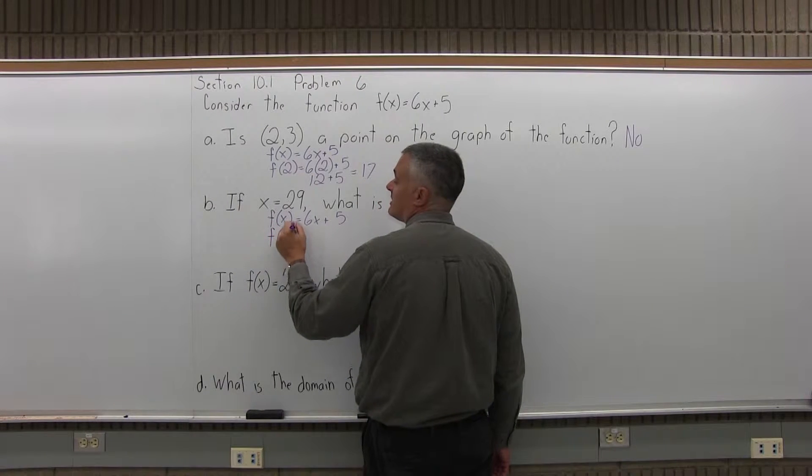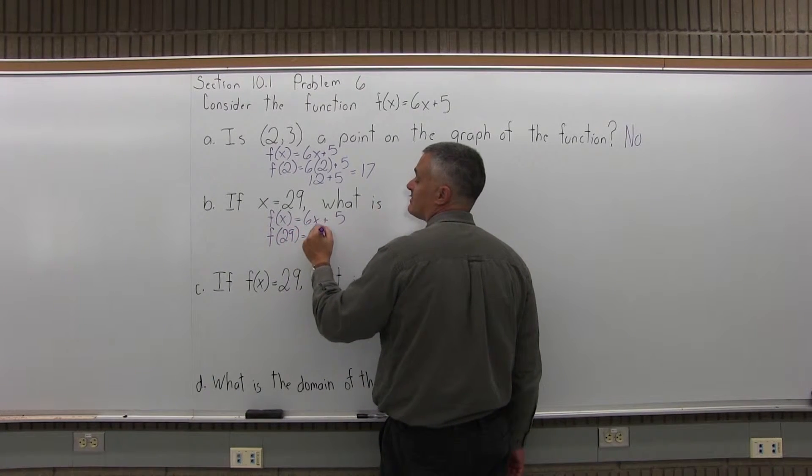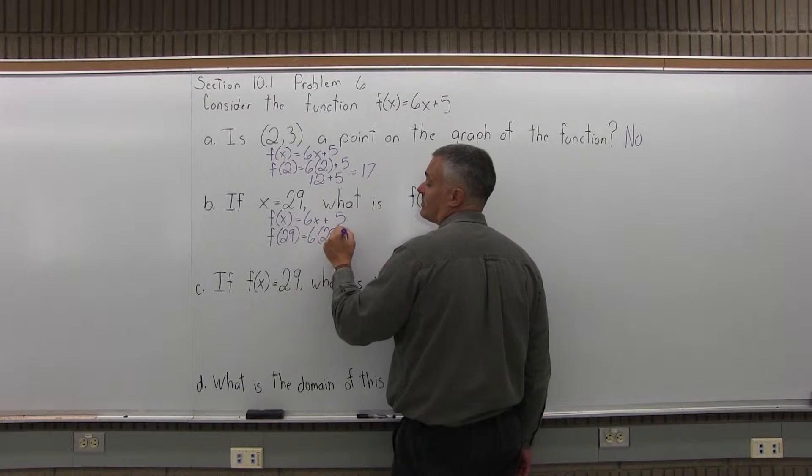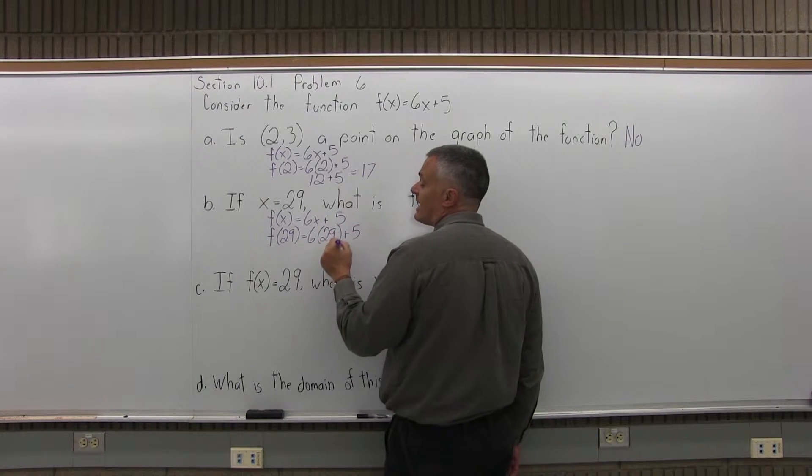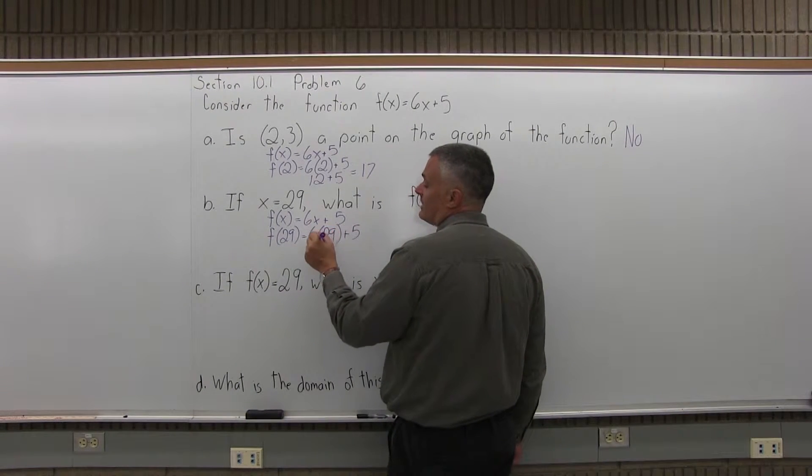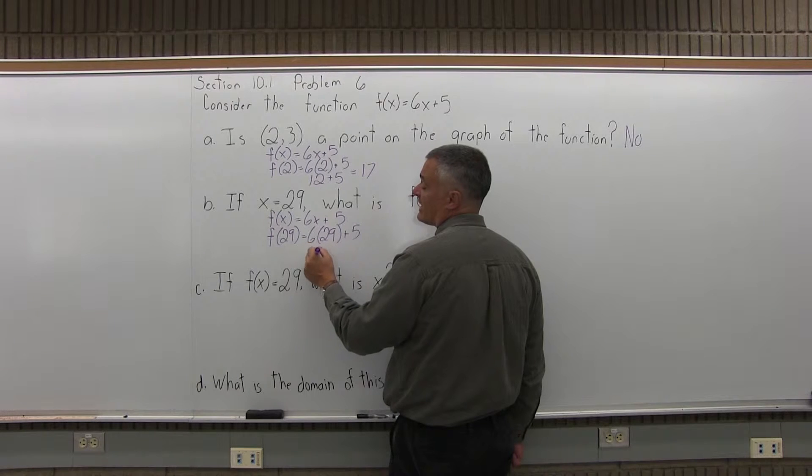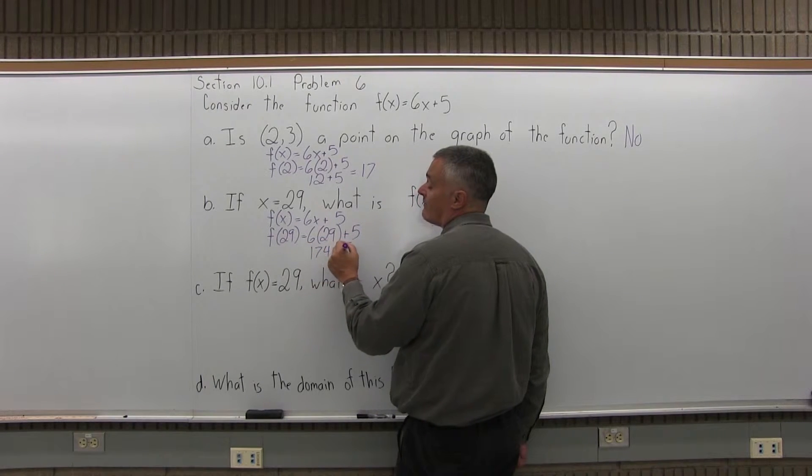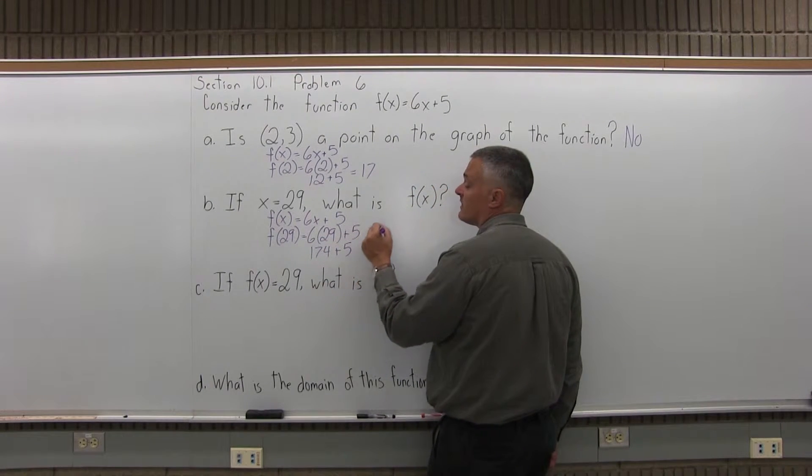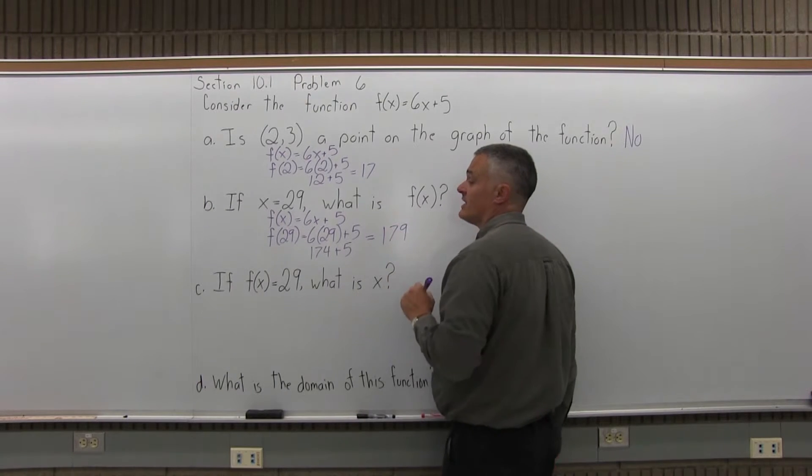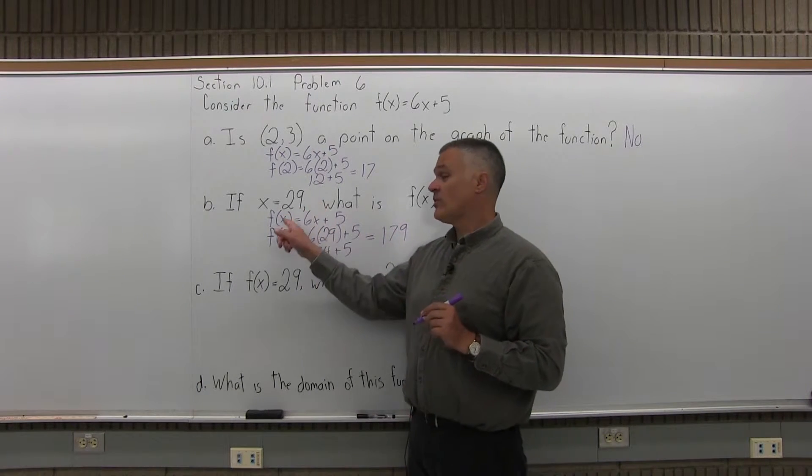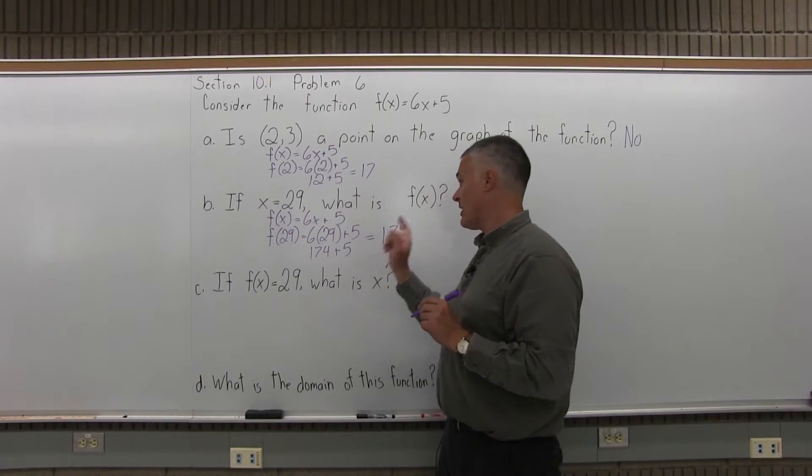So f of x becomes f of 29. 6 times x becomes 6 times 29, and you have plus 5 at the end. 6 times 29 is 6 times 20, which is 120. 6 times 9 is 54. 120 and 54, you're going to have 174. You're going to add 5 more, so 174 plus 5 more is 179.